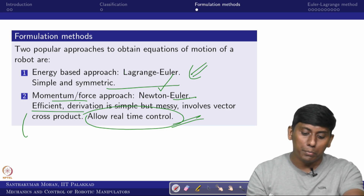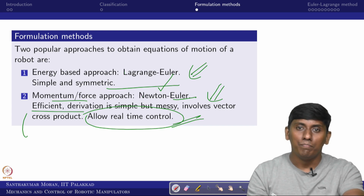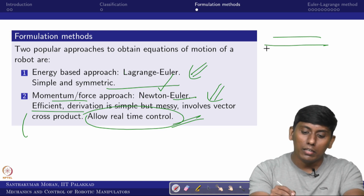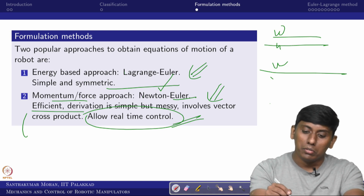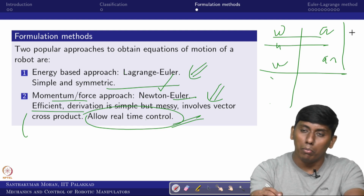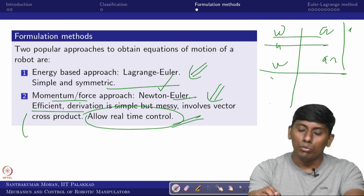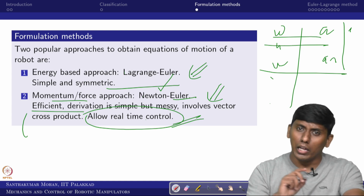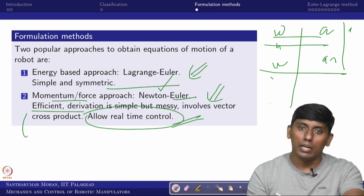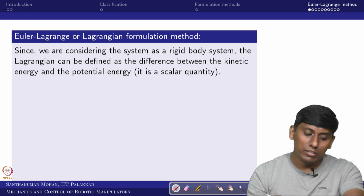The second method is the momentum-force approach using Newton's second law and Euler's equation of motion. It is very efficient computationally and for implementation since no partial or time derivatives are involved in the derivation. That is why most people use the Newton-Euler approach for real-time control rather than the Lagrangian-Euler approach, even though it involves vector cross products and is lengthier.